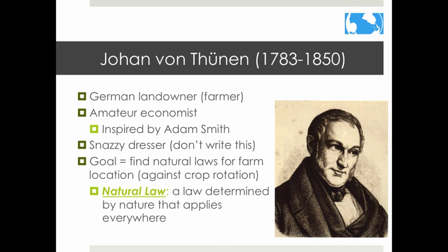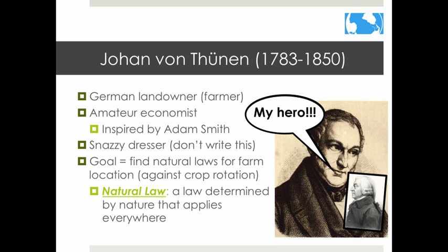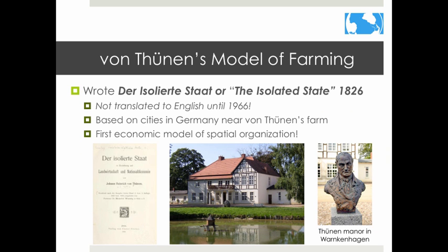Johan Von Thünen was a German landowner and amateur economist inspired by English economist Adam Smith. His goal was to find natural laws for farm location that went against the crop rotation system being suggested. He felt the scholars' system would not be practical and that in certain years farmers would actually lose money. He wrote a book called 'The Isolated State' to explain his ideas, though it wasn't translated into English until 1966.